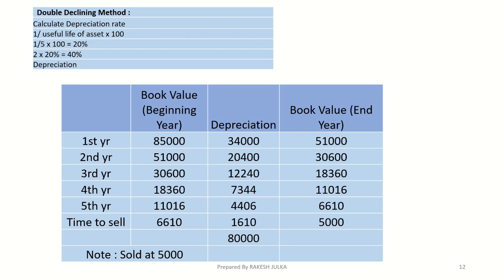Continuing the double declining calculation through the years: the closing balance at end of year five is $6,610. In the fifth year we calculate 40% on the opening book value, and the remaining amount is also treated as depreciation for that year. When the asset is sold at $5,000 at the end of the period, the remaining $1,610 will also be considered as depreciation for that particular year.